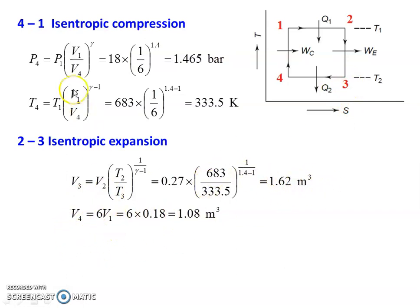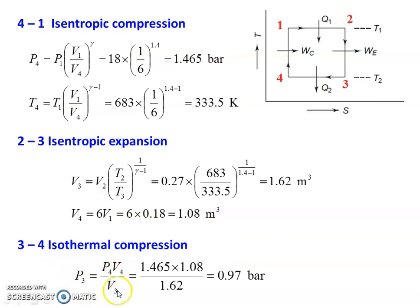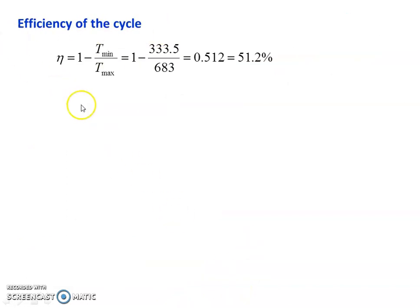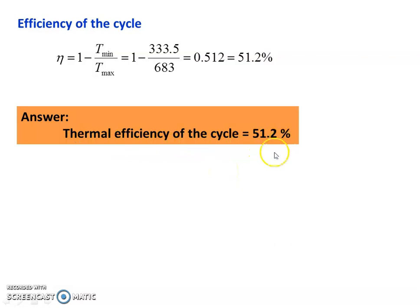V4 = 6 × V1 = 6 × 0.18 = 1.08 meter cube. For isothermal compression: P3 = P4 × V4/V3 = 1.465 × 1.08 / 1.62 = 0.97 bar. Efficiency of the cycle: eta = 1 − T_min/T_max = 1 − 333.5/683 = 0.512, which is 51.2%. Thermal efficiency of the Carnot cycle is 51.2%.